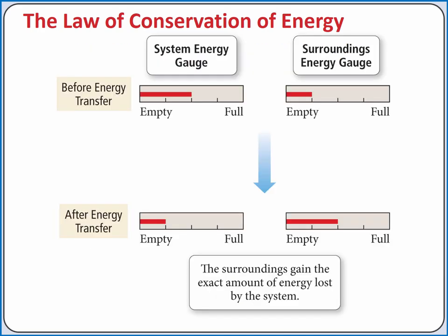When we discuss energy transfer, the system is what we're interested in studying. Everything else is considered the surroundings. In our previous example, we could consider the bowling ball to be the system. Any energy transferred to the system must come from the surroundings, and any energy lost by the system must be transferred to the surroundings so that the total energy is conserved.